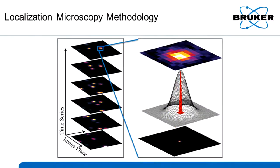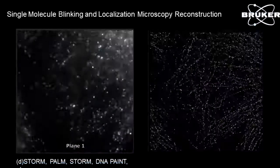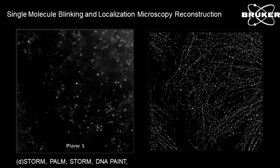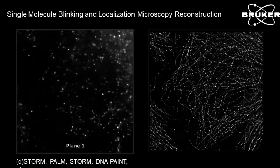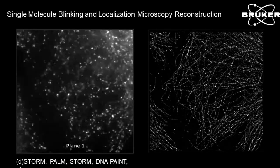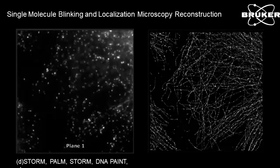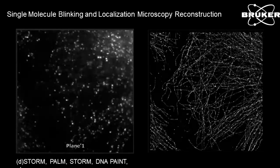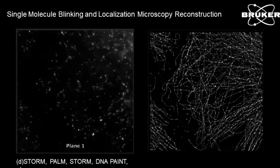In principle, what that means is we activate a few fluorophores at a time and make a movie of them blinking, then localize, fit, and record on the computer the position of the center points of those fluorophores. In practice, what this looks like is this tubulin labeled sample — in this case we're using D-STORM — hit them with very high laser power and a special buffer, get them to blink and then record. The software in real time localizes each one of those point spread functions and builds an image.